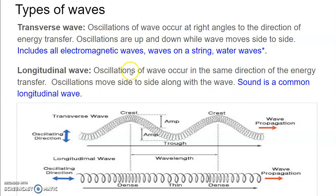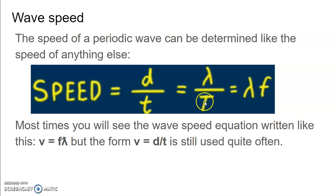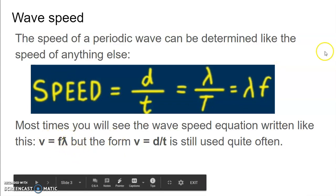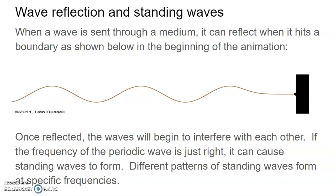Wave speed works the same way for sound as for any other wave. Speed is distance over time, and for waves that means wavelength over period. If you know the wavelength and the period, you can find the wave speed. Since one over the period is frequency, the speed of a wave equals frequency times wavelength: v = fλ.